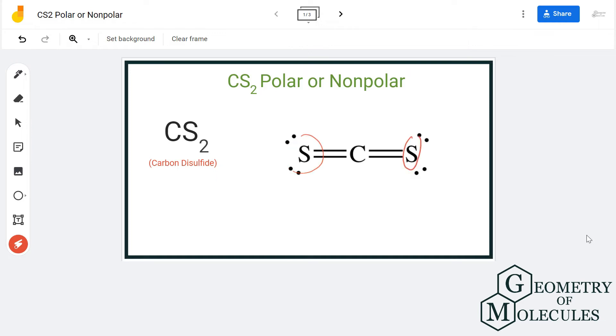As there is no unequal distribution of electrons, the charges are distributed evenly in this molecule. When charges are distributed evenly, there is no formation of poles. Since there are no poles in this molecule, CS2 is a nonpolar molecule.